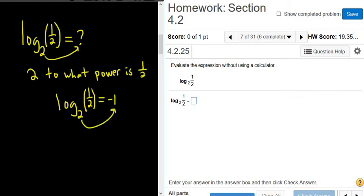2 to the negative 1 equals 1 half. And that's true, because what you can do is you can take the 2, and you can bring it downstairs, and then you get 2 to the 1.